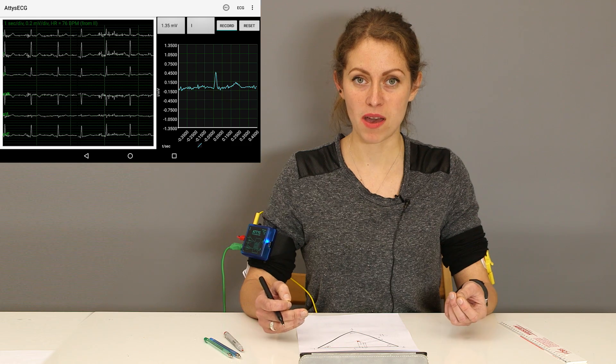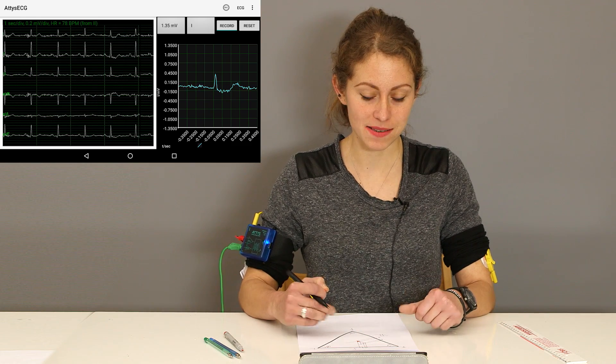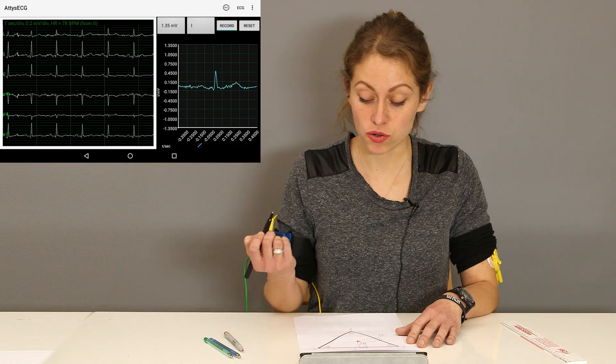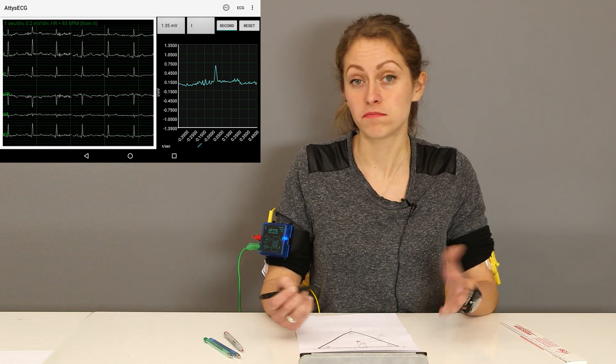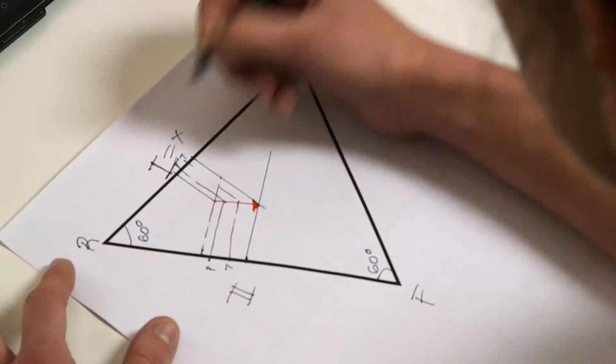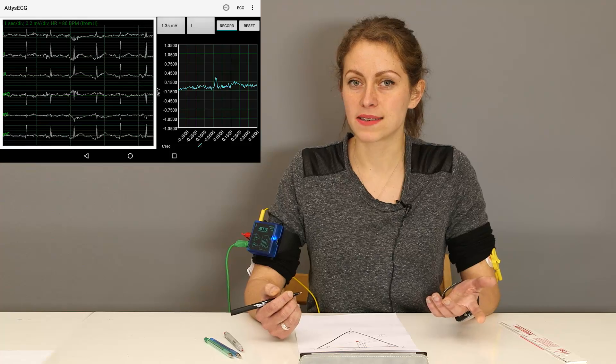So what we actually need is a proper Cartesian coordinate system with an x and y axis. Well, let's see if we can make this happen. So Eindhoven 1 could, for example, easily act as the x-axis there. But what about the y-axis?